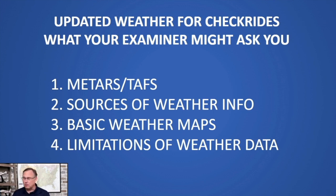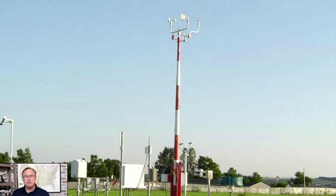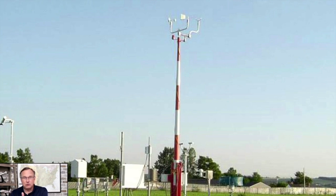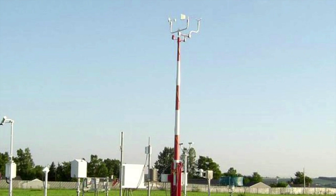Let's talk a little bit more about METARs and TAFs. Where does a METAR come from? You have to have some weather instrumentation. Most airports have either an ASOS or an AWOS station — Automated Surface Observing System or Automated Weather Observing System. They essentially do very much the same thing: precipitation, visibility, wind speed, wind direction, temperature, and dew point. That is an ultrasonic wind instrument — no moving parts there.